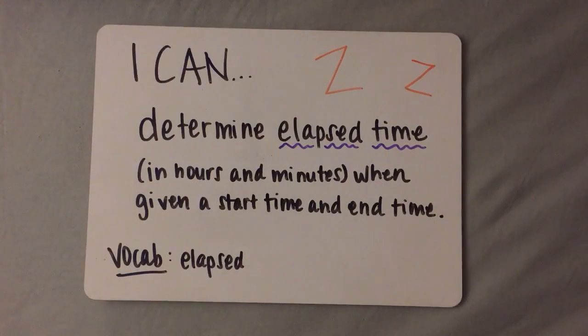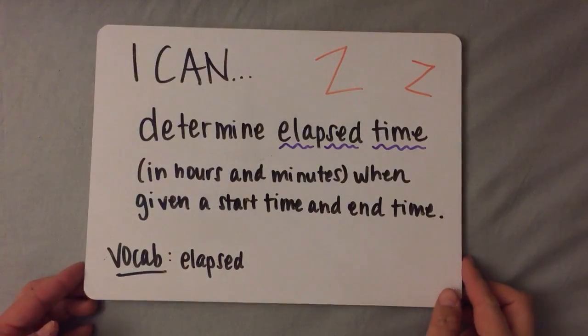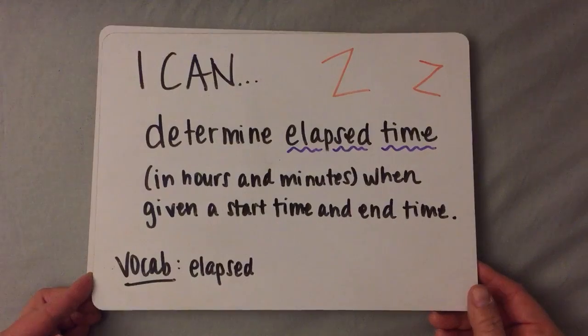The I can statement for this video is I can determine elapsed time in hours and minutes when given a start time and end time. The vocabulary you need to know is elapsed, and elapsed is just the time that occurs between the beginning and the ending of whatever it is that you're doing.